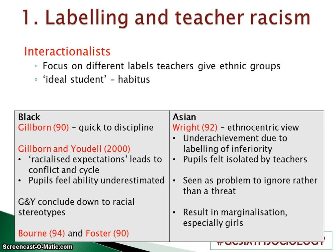These findings are backed up by Bourne, who found a higher exclusion rate among black boys particularly, because teachers saw black boys as a threat. Foster found that regardless of ability, black children were placed in lower sets rather than sets with other children of the same ability. Looking at Asian students, Wright believes that teachers hold an ethnocentric view of education and wider society — the idea that British culture is the best and all other cultures are inferior — and that pupils were also isolated by teachers mispronouncing Asian students' names or dismissing their culture or beliefs.